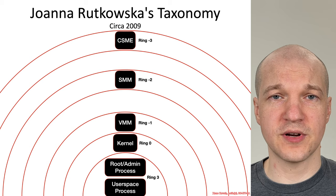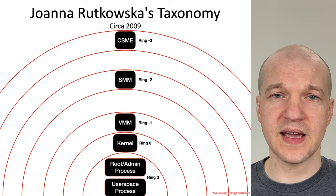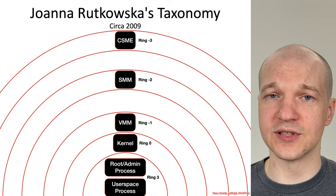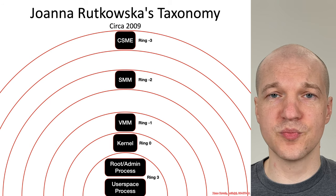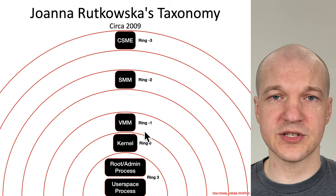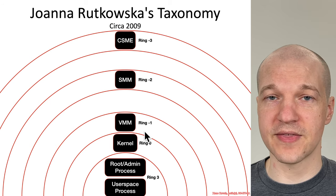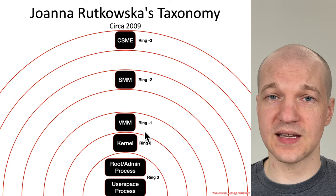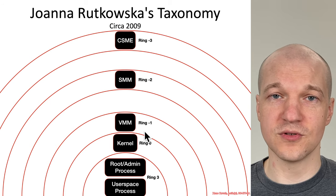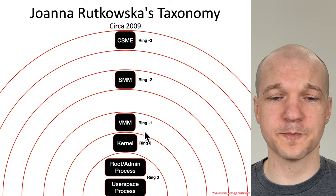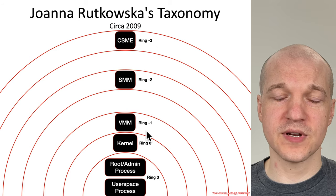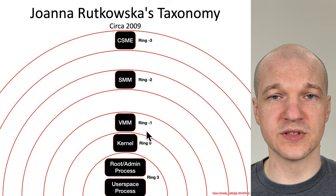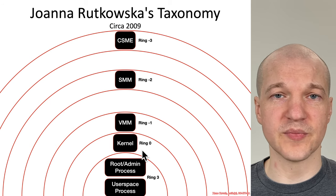Between 2006 and 2009, Joanna Rutkowska and her colleagues at Invisible Things Labs investigated different ways to attack the system at ever more progressively lower levels. In 2006, with her Blue Pill research, she talked about using virtualization as malicious software to basically virtualize an operating system that was not expecting it, and in so doing take control over all of the resources it thought it was managing. She coined the phrase "ring negative one" to indicate that this virtualization software was intrinsically more privileged than ring zero kernel software.